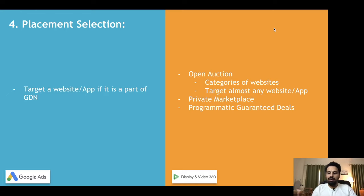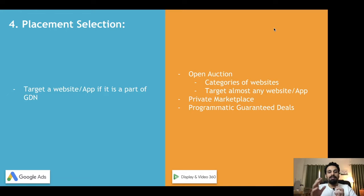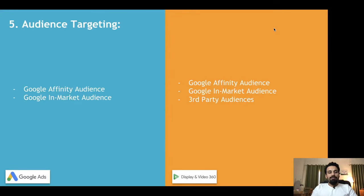The third inventory type is Programmatic Guarantee deals. It works like a conventional deal where you reach out to a specific publisher and ask to book a fixed number of impressions within a particular time range. The publisher guarantees a certain number of impressions with particular presets. For more on inventory types in programmatic advertising, there is a dedicated video linked in the description below.